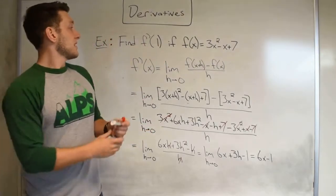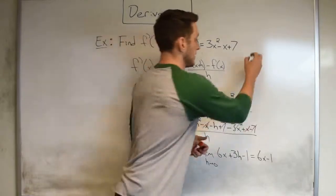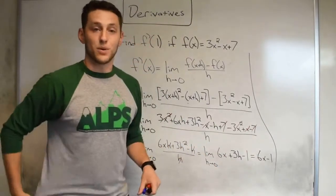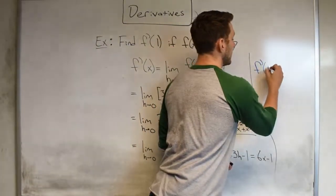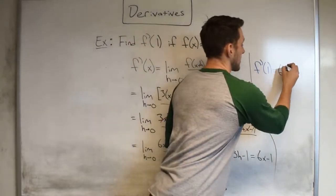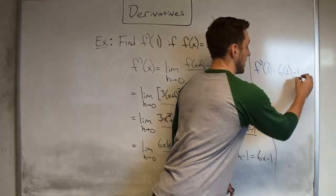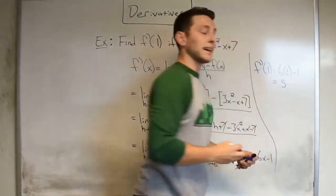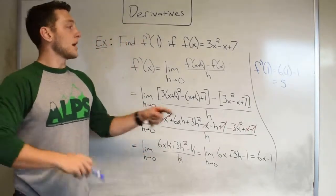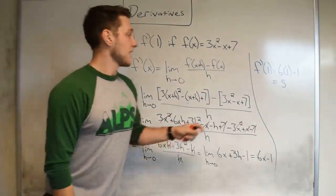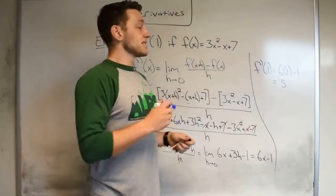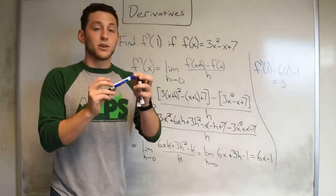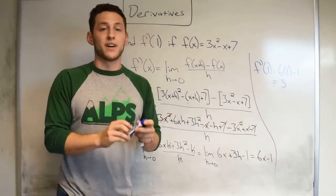Now the problem asks for us to plug in 1 to our derivative. So the ultimate step would say, well, therefore if my derivative is 6x minus 1, f prime of 1 would be 6 times 1 minus 1. Plug in 1, where you see an x. Doing out the algebra, it looks like we'll get an answer of 5. Now this tells me, by the way, how we interpret this, is this tells me at the point x equals 1, my instantaneous rate of change is 5. Or if I zoom in really close to x equals 1, it looks like I have a slope of positive 5 at that point.